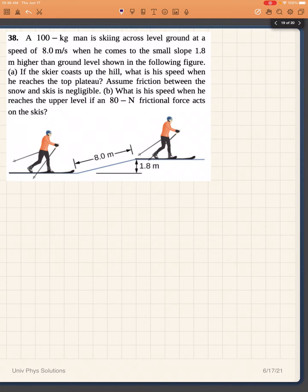Let's work problem 38 from OpenStax University of Physics, Chapter 8. A 100 kilogram man is skiing across level ground at a speed of 8 meters per second when he comes to a small slope 1.8 meters higher than ground level, shown in the following figure. If the skier coasts up the hill, what is the speed when he reaches the top plateau? Assume friction between the snow and skis is negligible. Part B: What is the speed when he reaches the upper level if an 80 N frictional force acts on the skis?